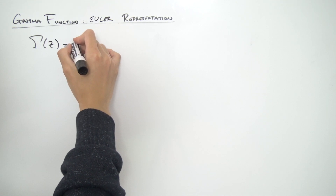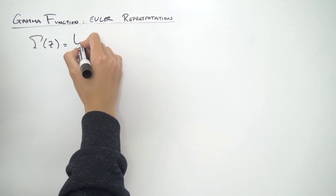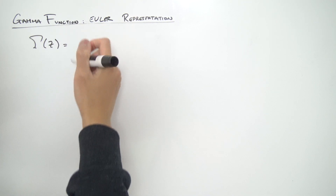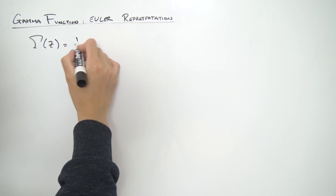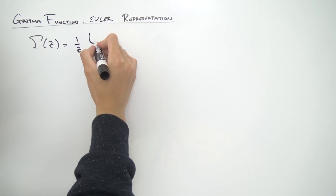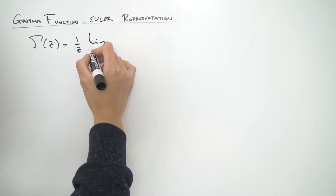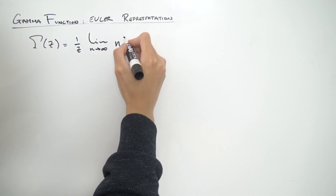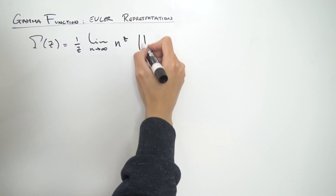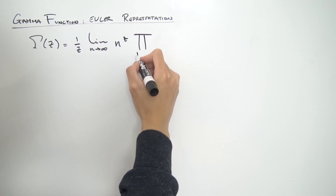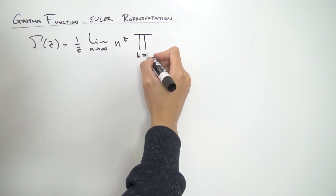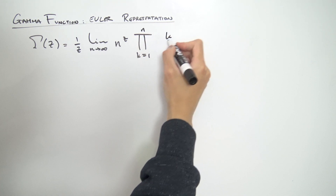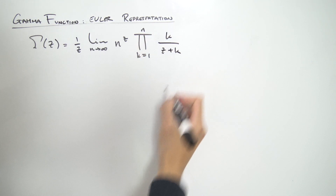So gamma of z is equal to 1/z times the limit as n approaches infinity of n^z, and then we have a product running from k equals 1 to n of k over (z + k).